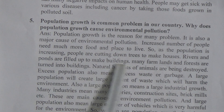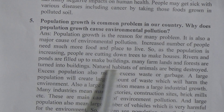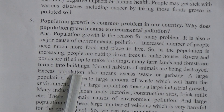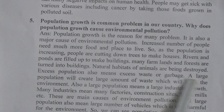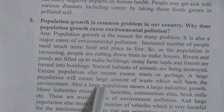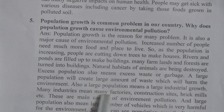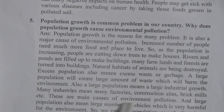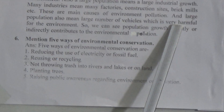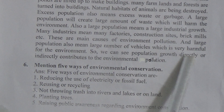Many farmlands and forests are turned into buildings, and natural habitats of animals are being destroyed. Excess population also means excess waste and garbage — a large population creates large amounts of waste which harms the environment. A large population also means greater industrial growth, leading to more factories, construction sites, and brick mills, which are major causes of environmental pollution. A large population also means a large number of vehicles, which is very harmful for the environment.